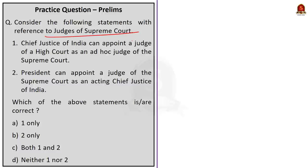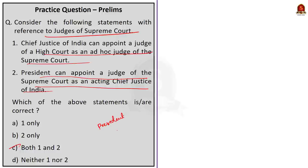Question 3 on Supreme Court judges: Statement 1 — the Chief Justice of India can appoint a High Court judge as an ad hoc judge of the Supreme Court — is correct. Statement 2 — the President can appoint a Supreme Court judge as Acting Chief Justice of India — is correct. This is possible when the office is vacant, the CJI is temporarily absent, or unable to perform duties. The correct answer is option C: both one and two.